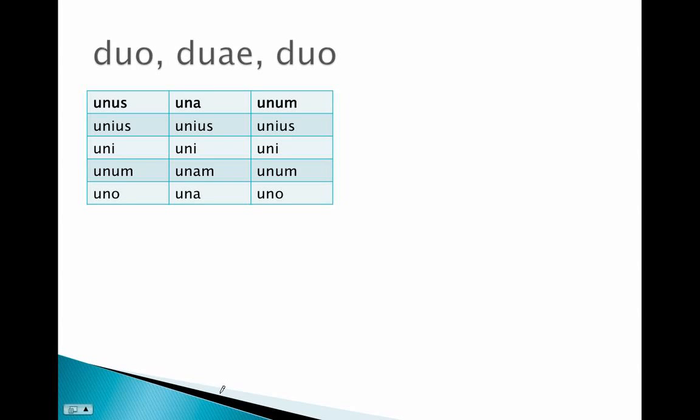We've already discussed the adjective unus, una, unum, which means, of course, one. Remember that most numbers don't decline, but one, two, and three do.